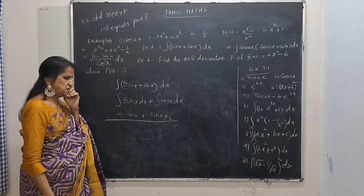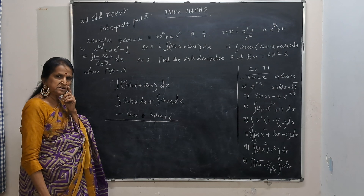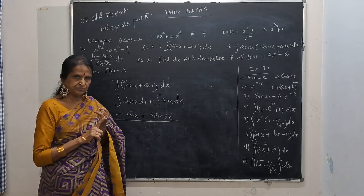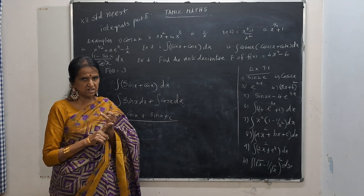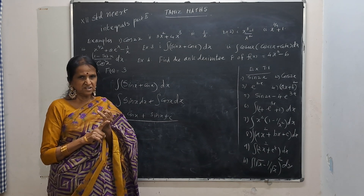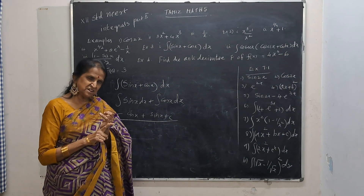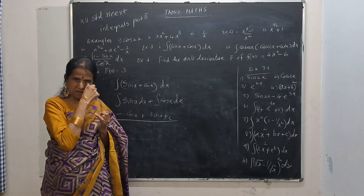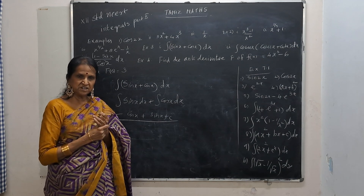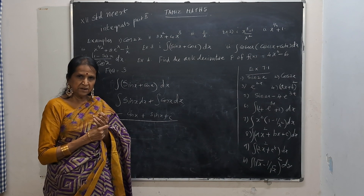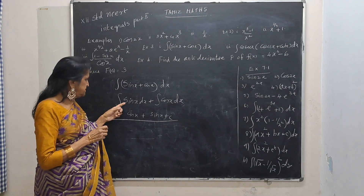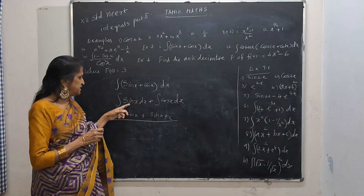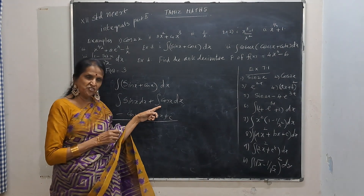One more extra formula: integral of sin x dx will be minus cos x plus c. We have to keep that in our mind. Our mind is tuned to positive for sin, but derivative of cos is minus sin. So integral of sin x is minus cos x. And integral of cos x — our mind thinks minus, but it's not minus — it will be sin x.